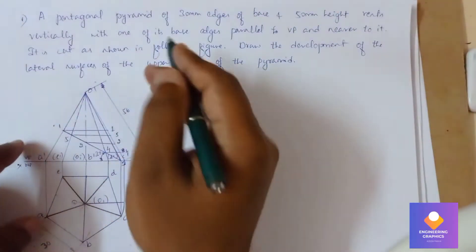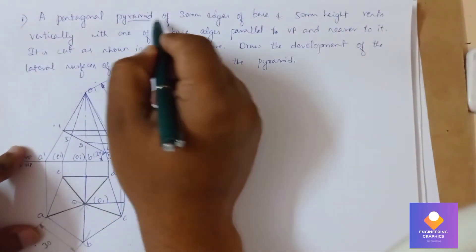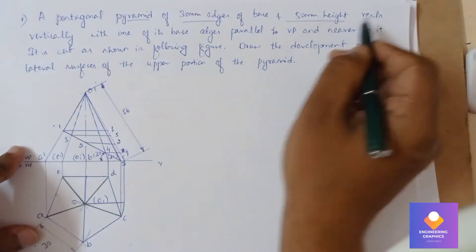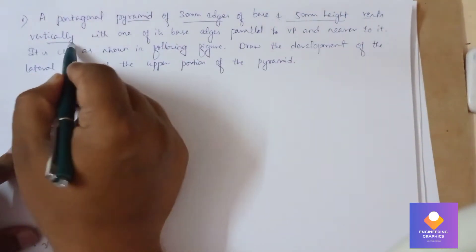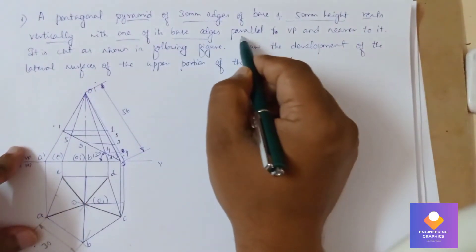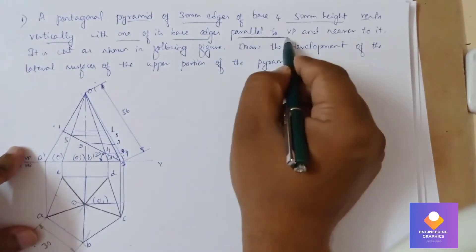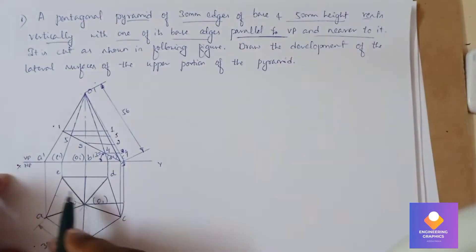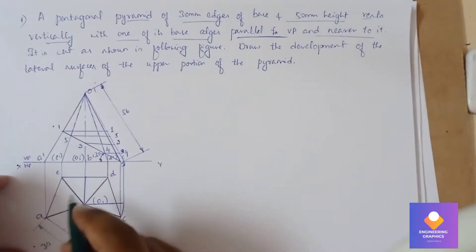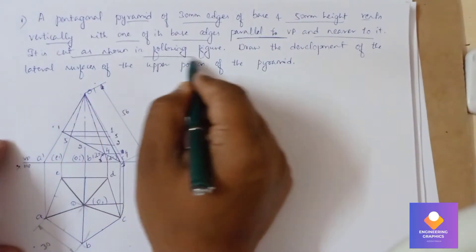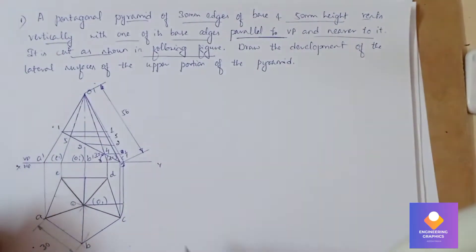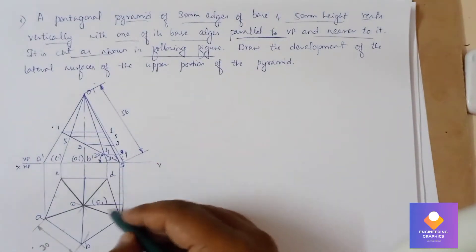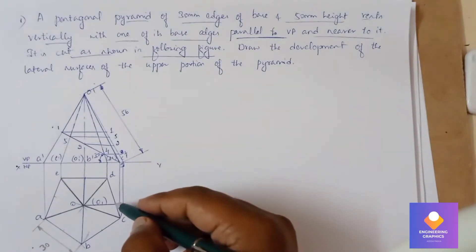In this problem, a pentagonal pyramid is given with 30mm base and 50mm height, placed vertically with one of its edges parallel to VP. We have constructed it parallel to VP and near to it — you can see it is parallel. It has been cut as shown in the following figure.